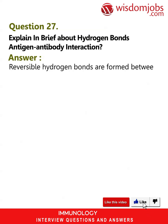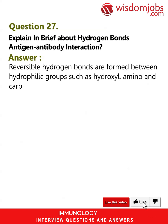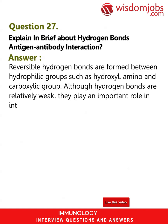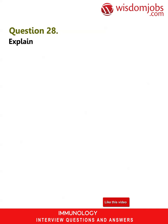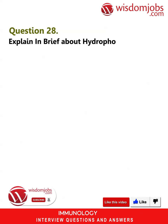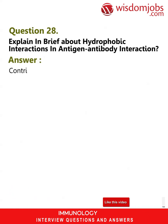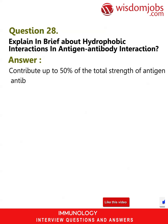Question 27: Explain hydrogen bonds in antigen-antibody interaction. Answer: Reversible hydrogen bonds are formed between hydrophilic groups such as hydroxyl, amino, and carboxylic groups. Although hydrogen bonds are relatively weak, they play an important role in antigen-antibody interaction. Question 28: Explain hydrophobic interactions in antigen-antibody interaction. Answer: These contribute up to 50 percent of the total strength of antigen-antibody interactions.